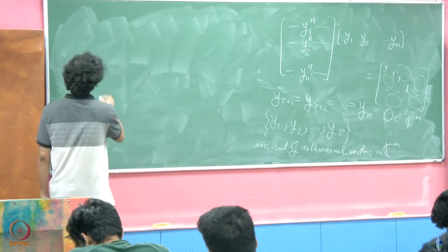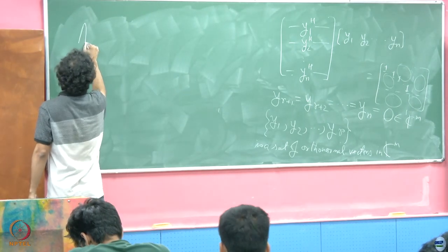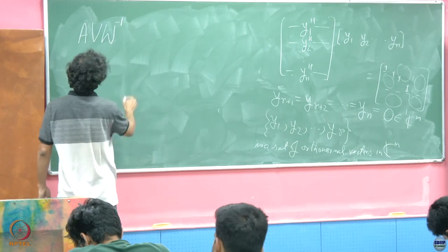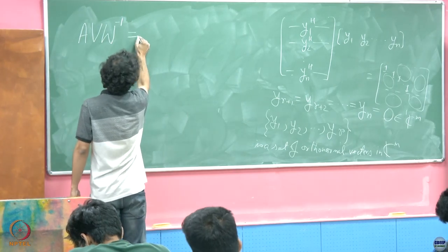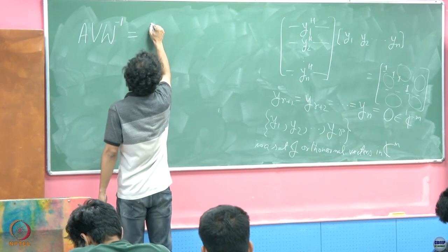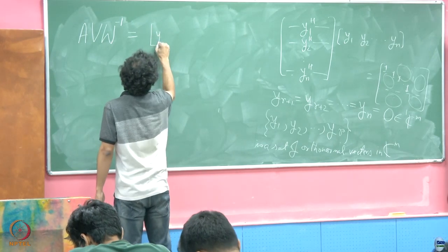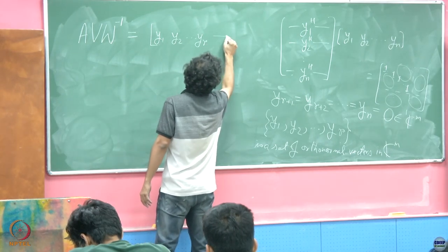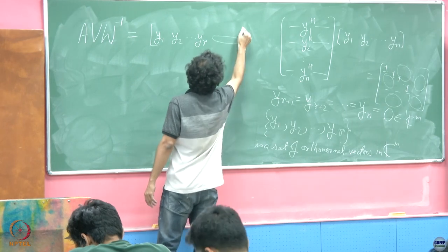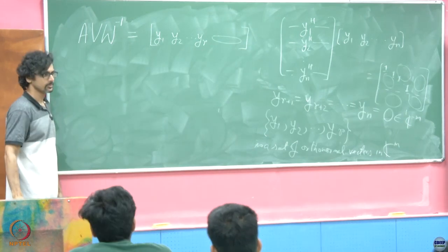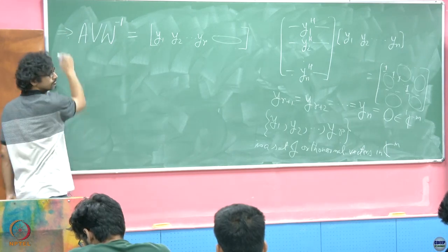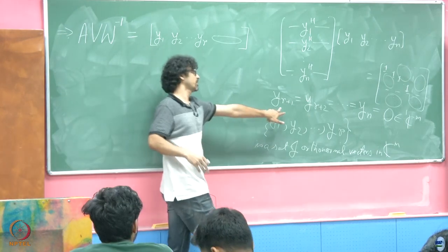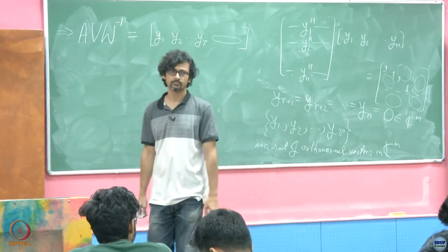So now, what we have essentially shown is A v w inverse equals what exactly? y1, y2 till yr, and then a whole bunch of 0s, is it not? Just that conclusion, just padding it here because r plus 1 onwards every other fellow is 0.